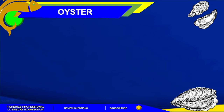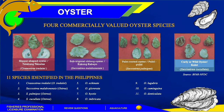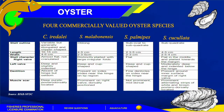A female oyster can spawn 100 million eggs annually. Oysters are filter feeders and their main food is diatoms. In our country, we have 11 identified species of oysters, and four of them are commercially valued: the slipper-shaped oyster or talaba (Crassostrea iredalei), the sub-trigonal oblong oyster or kukong-kabayo (Crassostrea malabonensis), the long-rooted oyster or pulid-pulid (Crassostrea palmepes), and the curly or wavy oyster or kulot (Crassostrea cuculata). Please take note of the differences among these four commercially valued oyster species in the Philippines.